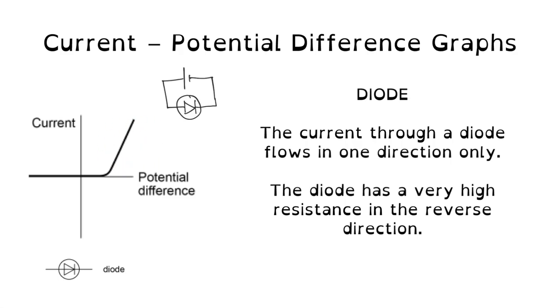So this part of the circuit is when the diode goes the correct way, the current goes from the positive part of the battery, through the diode, and back round. If we swap the direction of the diode, the current still comes out of the battery the same end, but it hits that brick wall, and that's when you get an infinitely high resistance, and no current can flow.